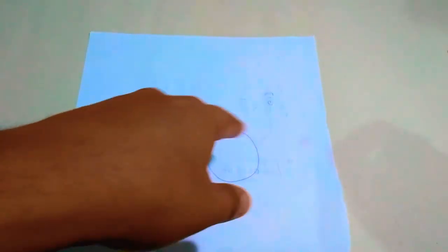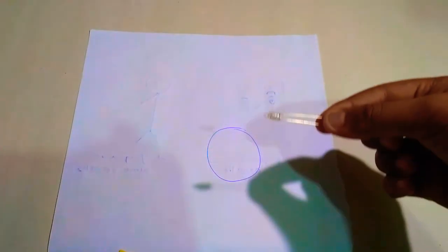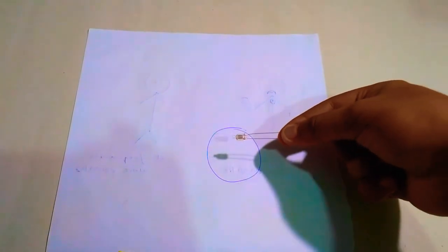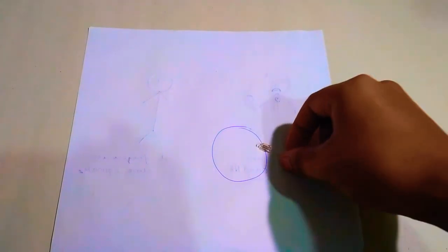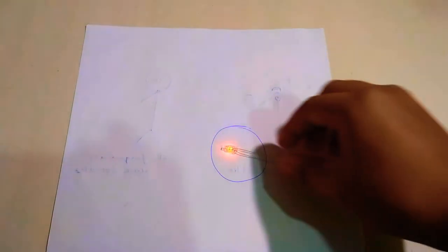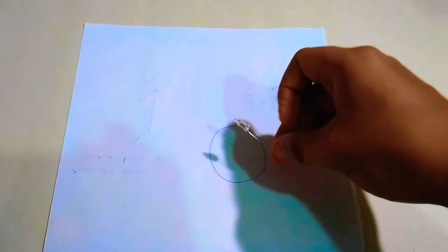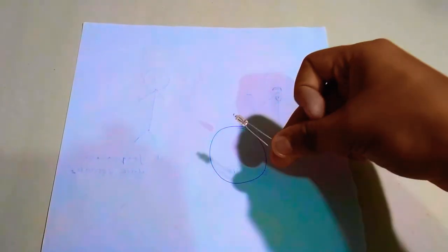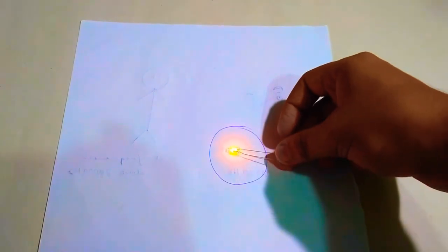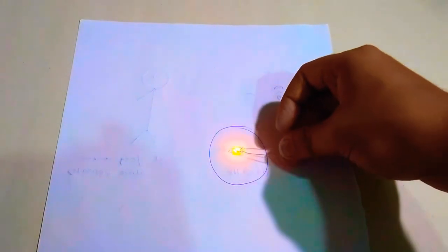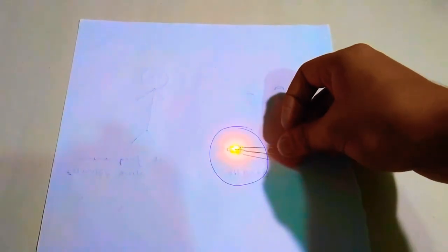The Tesla coil is over there. If I take this neon bulb then it will light up like this. It does seem like magic but actually there is a Tesla coil underneath the table.